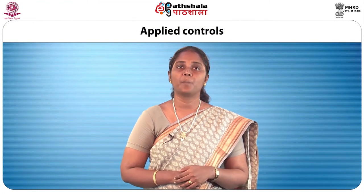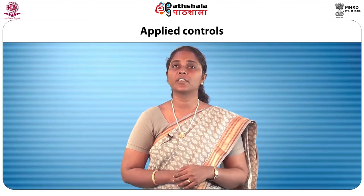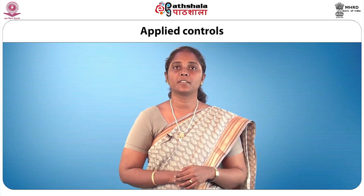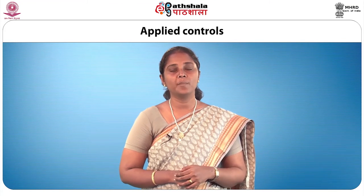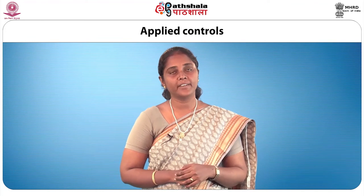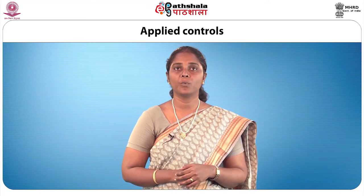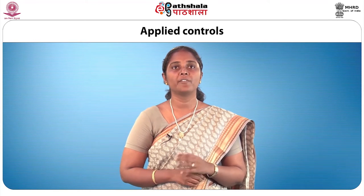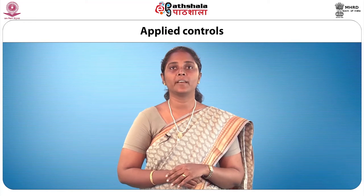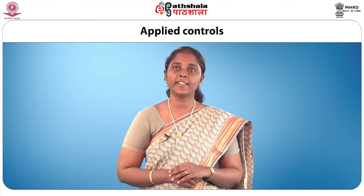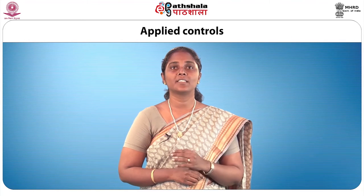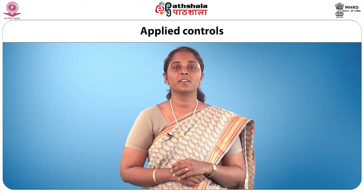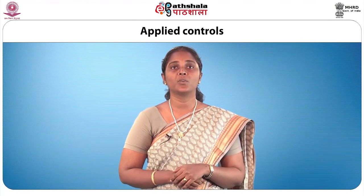Applied controls do not control pests quickly or completely. An example is host resistance — some plants, animals and structures resist pests better than others. It works in one of three ways: chemicals in the host prevent the pest from completing its life cycle; the host is more tolerant and thus less likely to be seriously damaged by pest attack; or the host has physical characteristics that make it more difficult to attack.